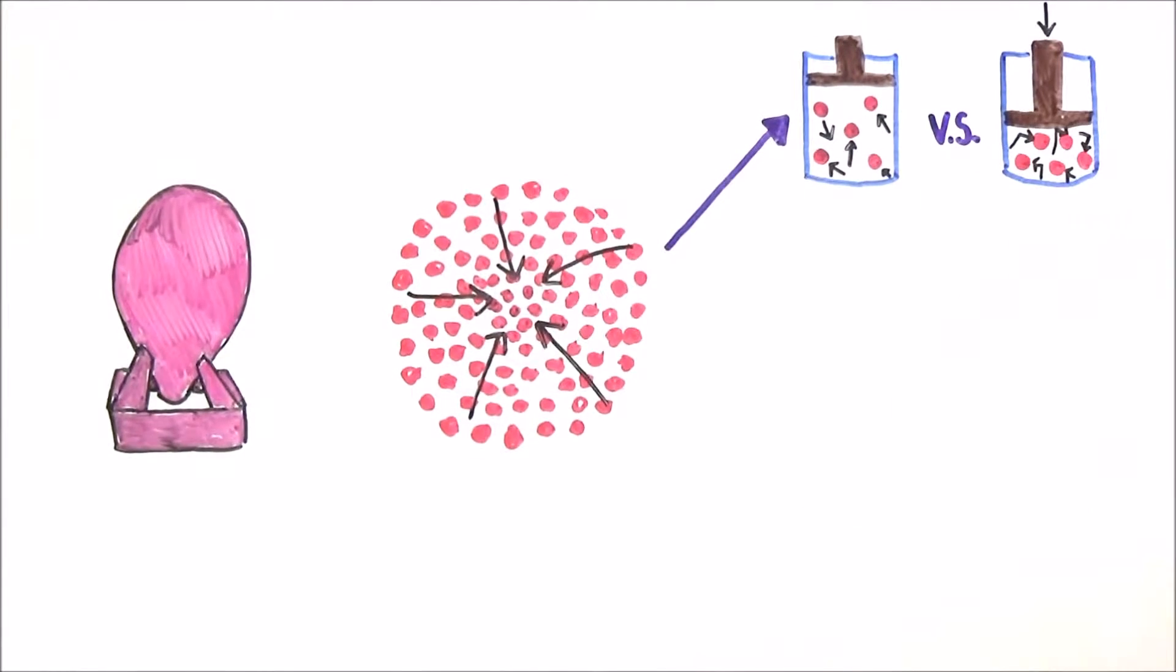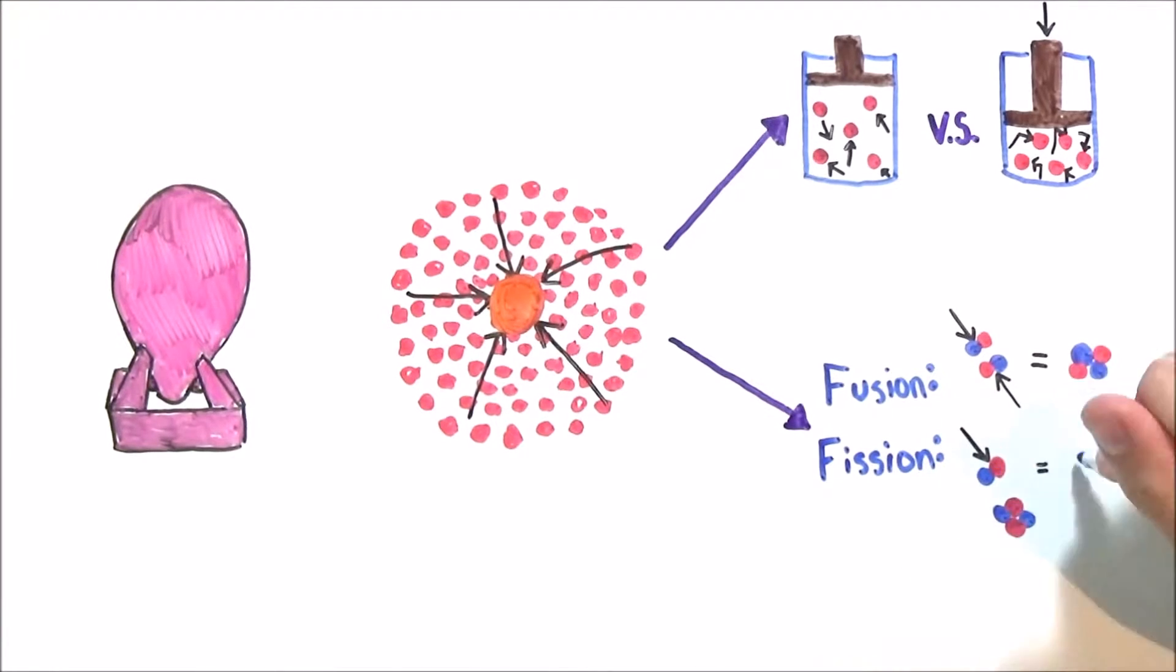Once the hydrogen atoms start hitting each other enough, the temperature of the center of the star becomes hotter and hotter until nuclear fission and fusion occur. Fusion is when atoms merge to form heavier atoms, and fission is when atoms are separated into lighter atoms.